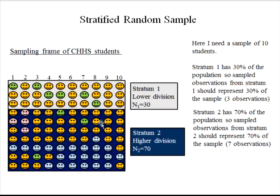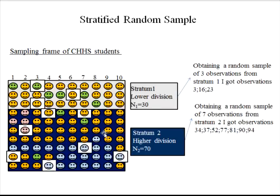Now that you know how many to select from each stratum, you randomly select them. I asked Excel to randomly pick three observations from the first stratum, and it gave me observations 3, 16, and 23. I did the same with stratum two, and it gave me seven observations.